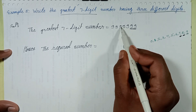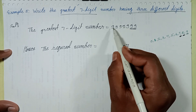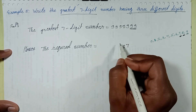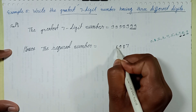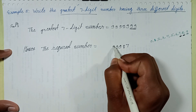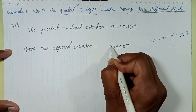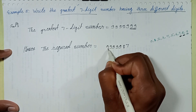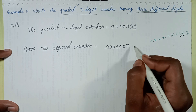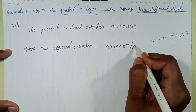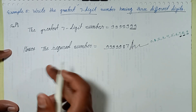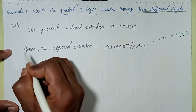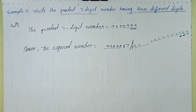One, two, three, four, five — five nines — then eight and seven. This is my answer. Hence the required number is 9,9,9,9,9,8,7.